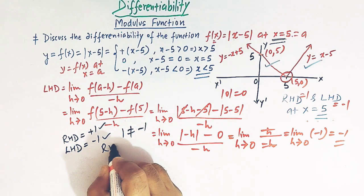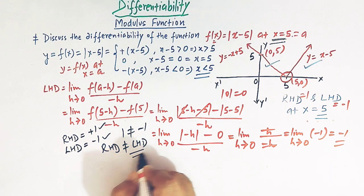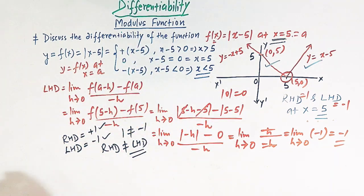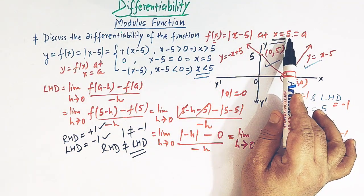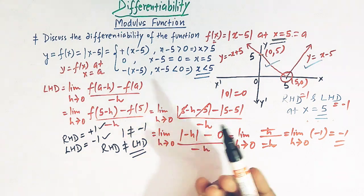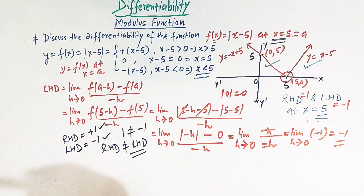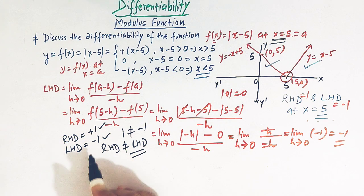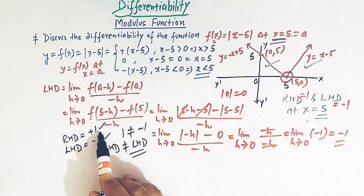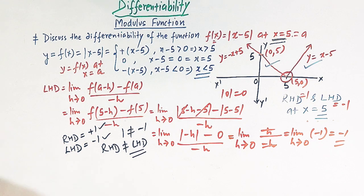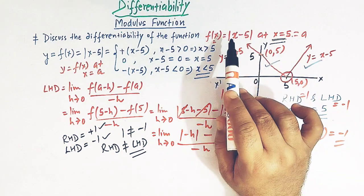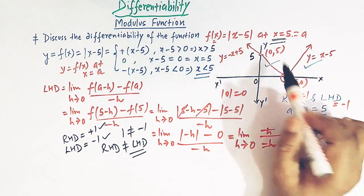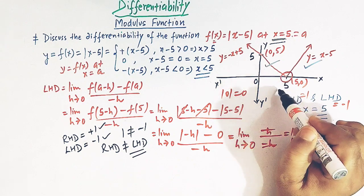Although both derivatives exist and are finite, we can see that 1 ≠ -1, so the right hand derivative is not equal to the left hand derivative. Therefore this function is not differentiable at x = 5.